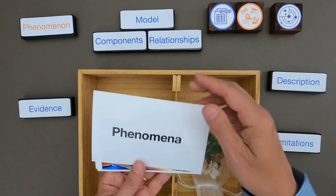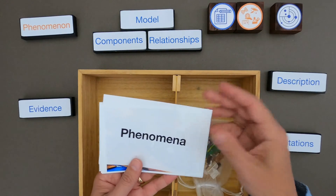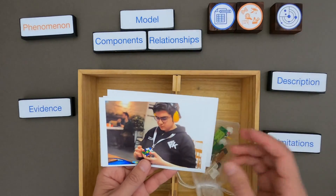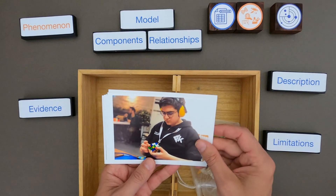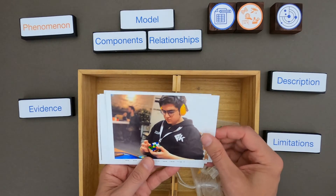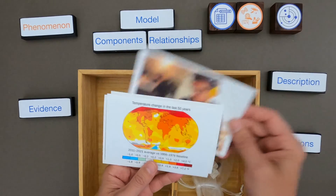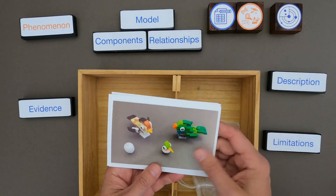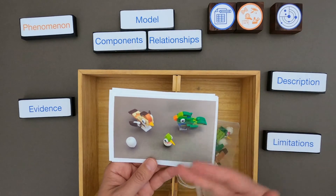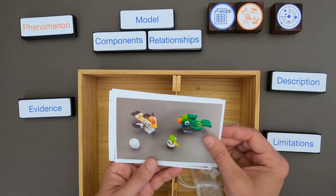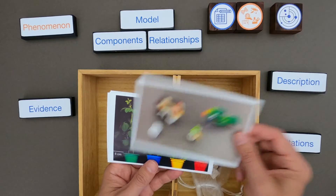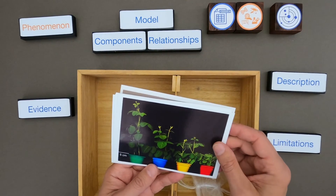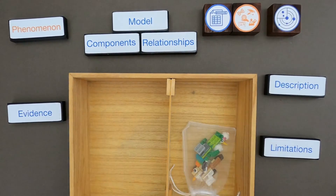After watching this video you should be able to look at evidence and develop models on results from the speedcubing world championships — how fast you can solve a Rubik's Cube — or climate change and what's causing that. I'm going to start by looking at some evidence on the building of these four LEGO birds, and then you'll have a chance to do the same with plant growth. So let me clean this up and we'll get started.